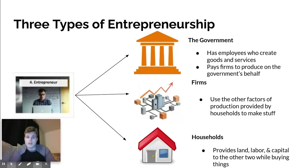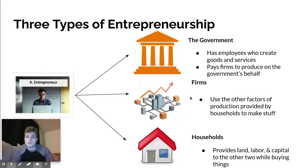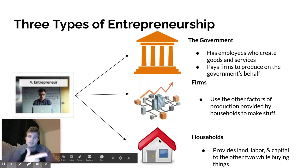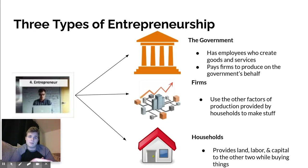Firms are businesses that use the factors of production from households to make goods and services. They also provide wages to people like you and I when we go to our job. Households is simply a fancy term to say people like you and I. When you go to your job, you're providing your land, your labor, and your capital — land being natural resources in case you're a farmer, capital being the training and skills you bring to your job, and labor being the physical work that you're putting into your product.